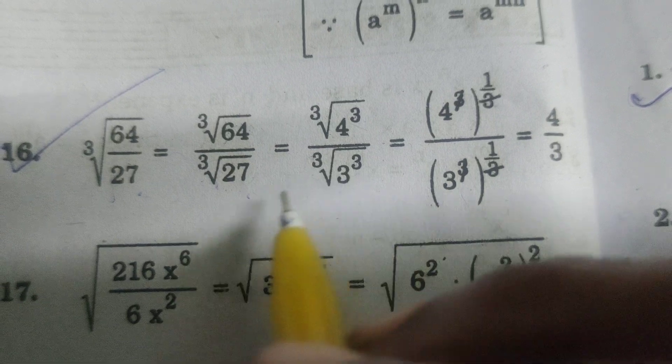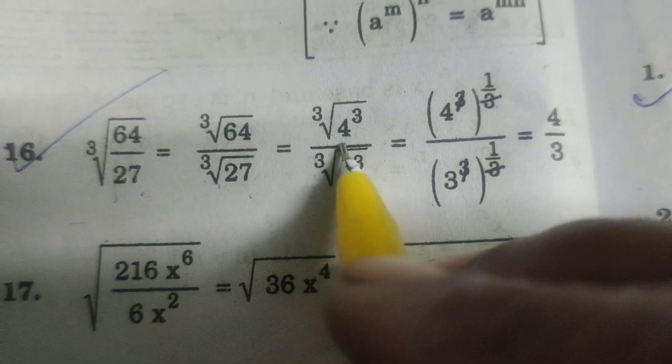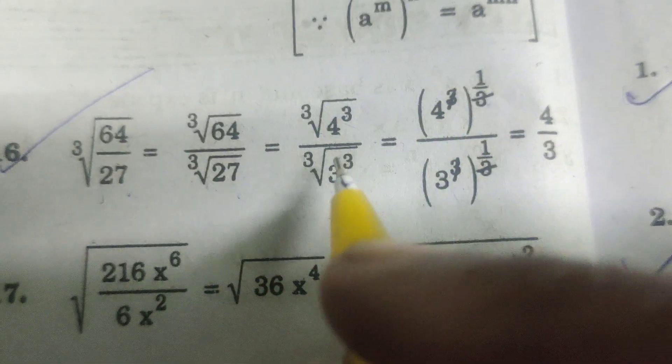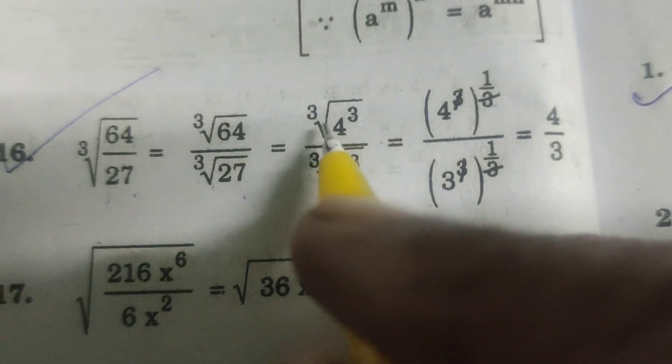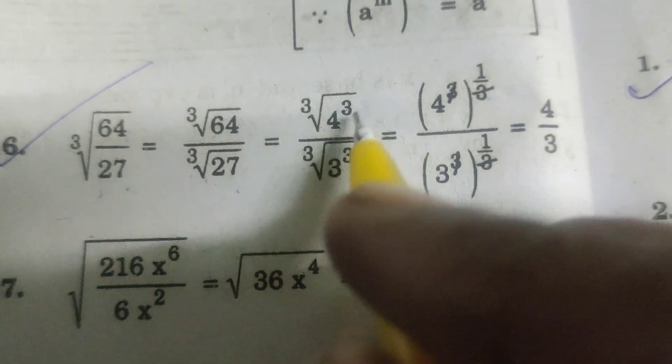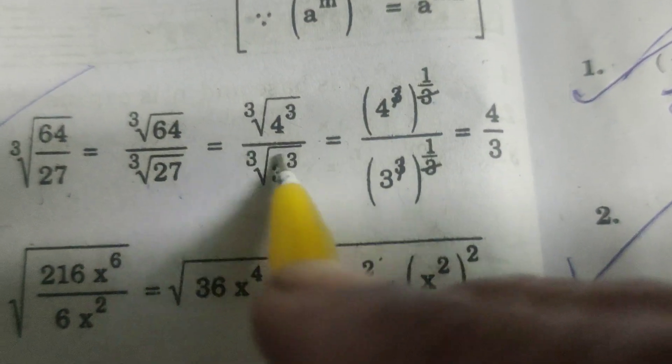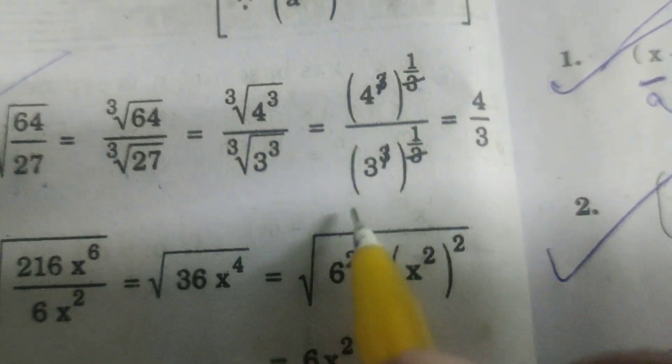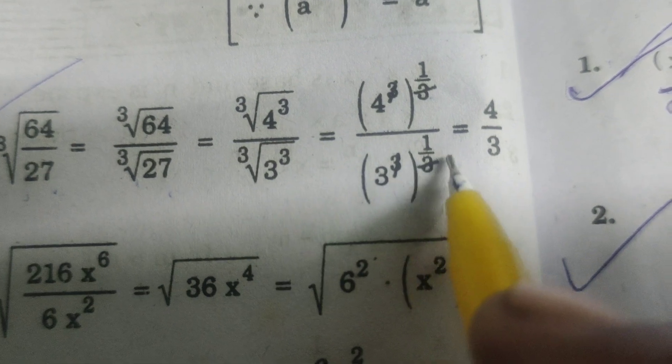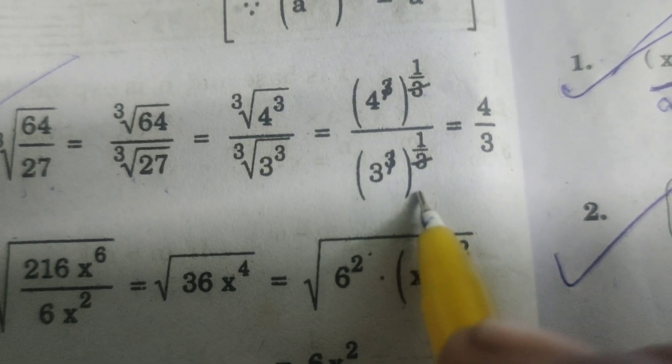3 cube means 27, 4 cube means 64. Therefore, cube root of 4 cube is 4 cube whole power 1 by 3, by cube root of 3 cube is 3 cube whole power 1 by 3.